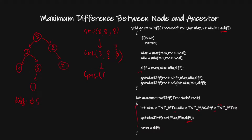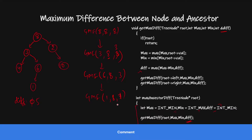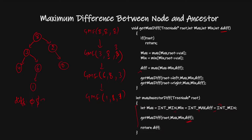From node 6, I go to getMaxDifference for its left child, which is 1. I pass max = 8 and min = 3. Now min(3, 1) = 1, so minimum is updated to 1. The difference is 8 minus 1 = 7, so my new maximum difference is 7. Node 1's left and right are both null, so they return. Node 1 is done, node 6 is done, and node 3 is done.